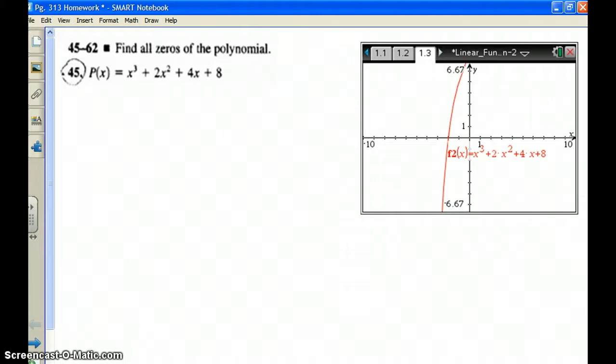Okay, so we're going to do some of the homework problems, and this is what I expect you to do first. Draw graphs. Identify the rational zero. X equals negative 2 in this case.